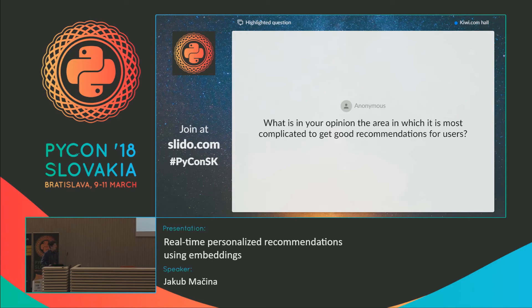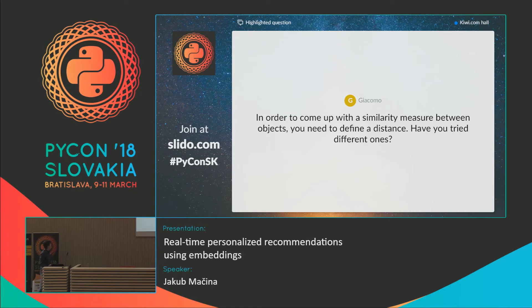Have you tried different distance or similarity measures? Cosine similarity is a good way to start, and we experimented with Euclidean distance, but the results were not that different.